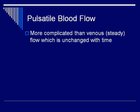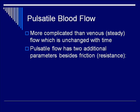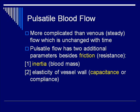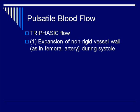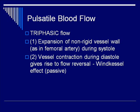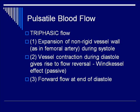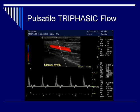Let's talk about pulsatile blood flow, or arterial flow. In comparison to venous or steady state flow, it is more complicated. In addition to friction or resistance, you also have to consider inertia, which is blood mass, as well as elasticity of the vessel wall, namely capacitance or compliance. The key characteristic of pulsatile blood flow is triphasic flow. In phase 1, you have expansion of the non-rigid vessel wall during systole pushing blood forward. In phase 2, during early diastole, the vessels contract and the extra volume of blood gives rise to flow reversal, otherwise known as the Windkessel effect. At the end of diastole, phase 3, you have a little bit of forward flow in the Doppler signal. Here is an example of the brachial artery Doppler diagram, where the gate is right in the middle of the brachial artery, showing phase 1 large forward flow, followed by flow reversal in phase 2, and finally phase 3 forward flow as the aortic valve closes.